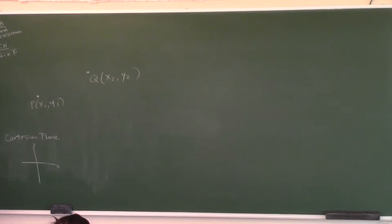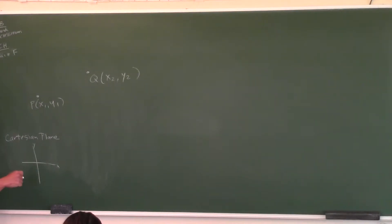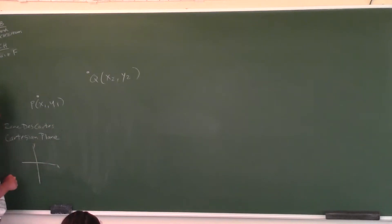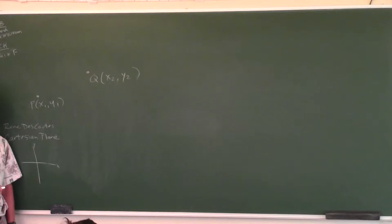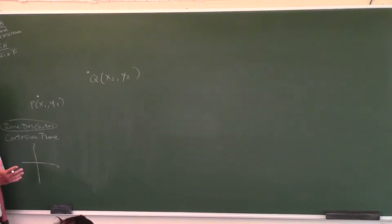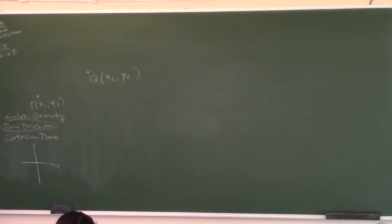Why do we call it the Cartesian plane? Because it's named after a famous mathematician — Rene Descartes. Where did you hear that name before? Anyway, it's named after the mathematician Rene Descartes. He is the father of the Cartesian plane and analytic geometry.